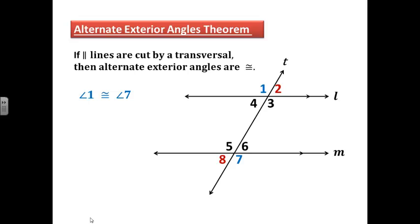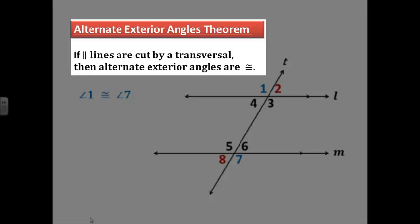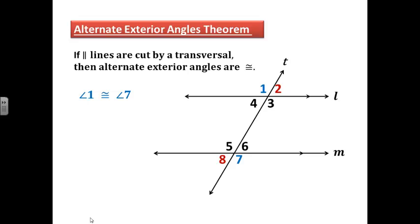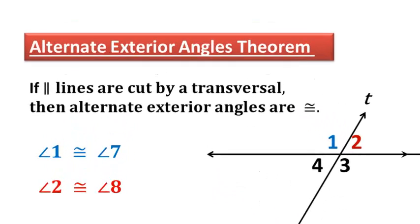In the alternate exterior angles theorem, hopefully you can see the pattern here. If we have parallel lines, then alternate exterior angles are congruent. So in this diagram, angle 1 and angle 7 are alternate exterior angles, and if lines are parallel, they are congruent. And angle 2 and angle 8 are also congruent if we have parallel lines.